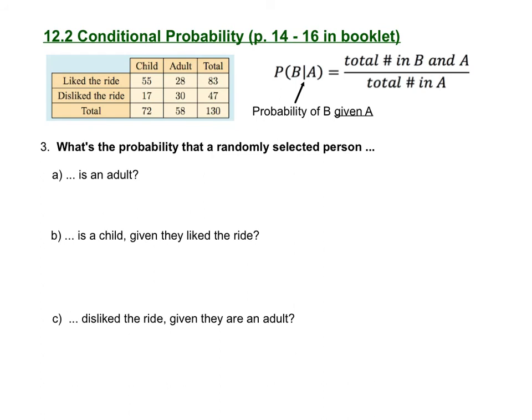Next, let's review lesson 12.2 on conditional probability. Remember that conditional probability is when you have the probability of one event happening given that another event has already happened. This formula is right in your notes on page 14. The probability of B given A is found by taking the total number in both B and A, divided by the total number in A. You always divide by the one that's given.